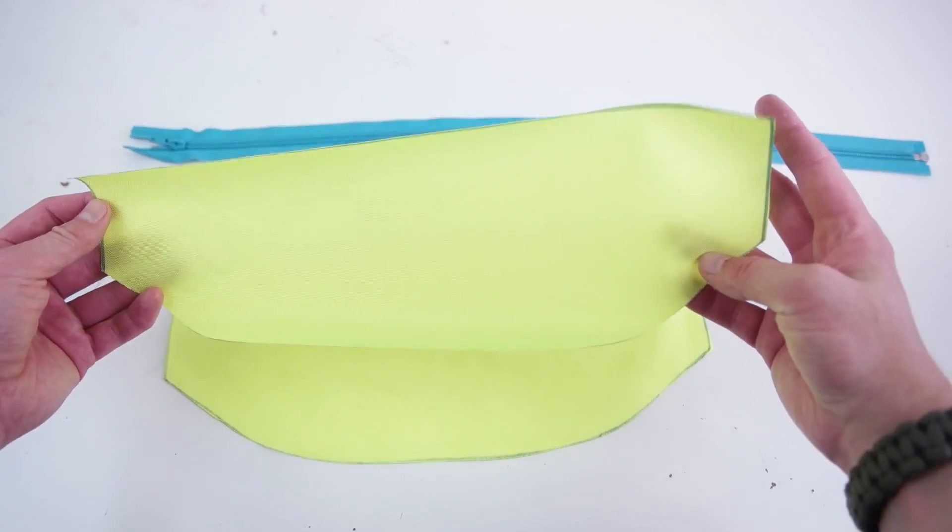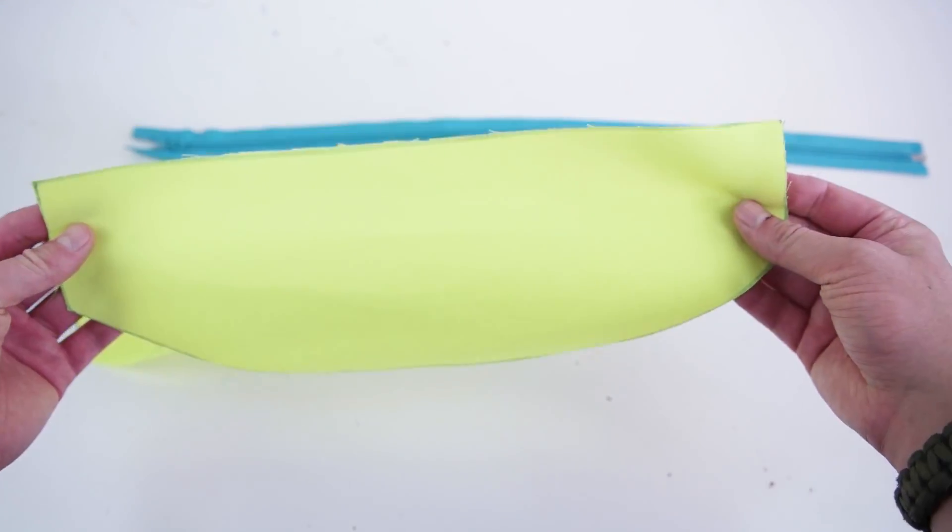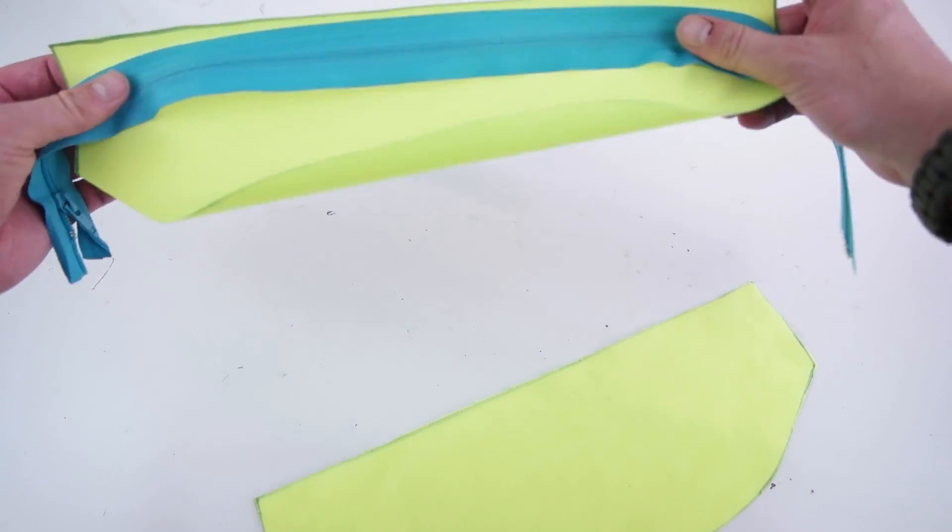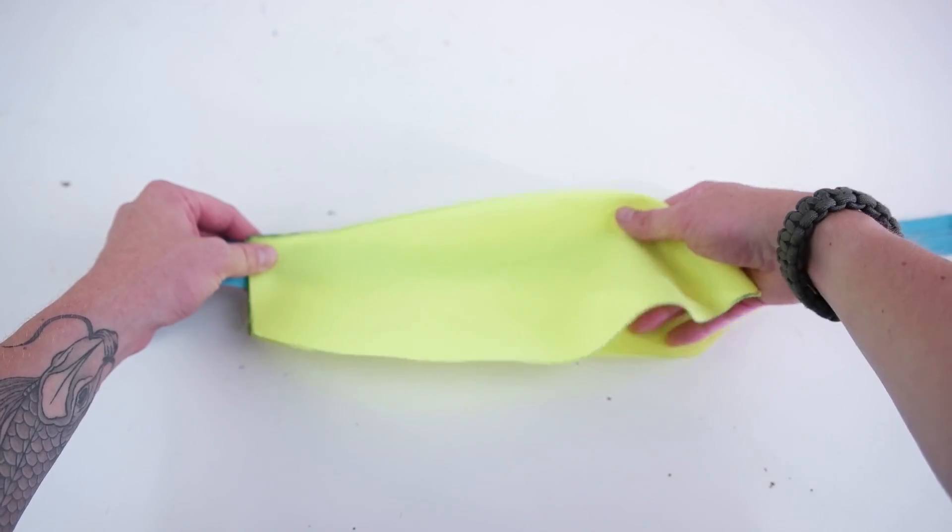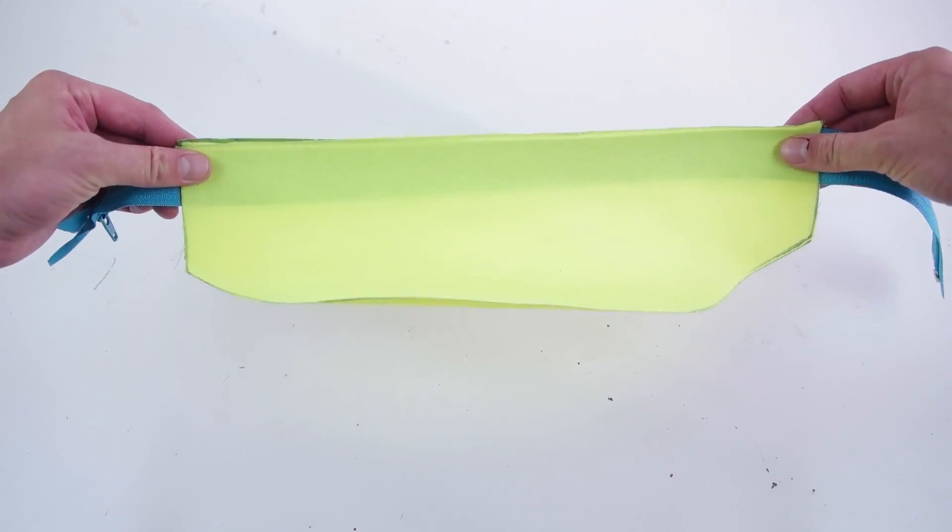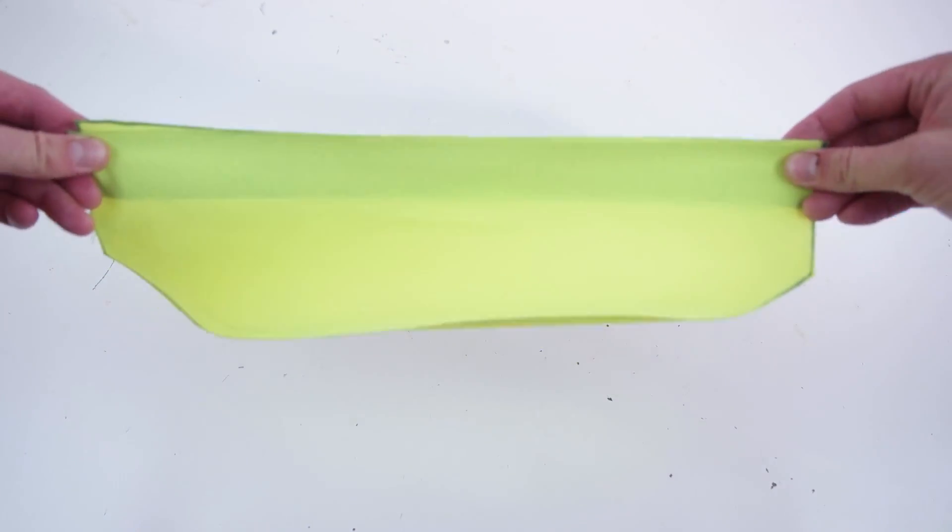Grab your bottom panels, both the outside layer and the lining, and grab your zipper. What you're gonna do is place that zipper on the right side of both and sandwich it in between the outer layer and the lining. As you can see, the zipper is way bigger, but you're gonna be trimming those ends off.